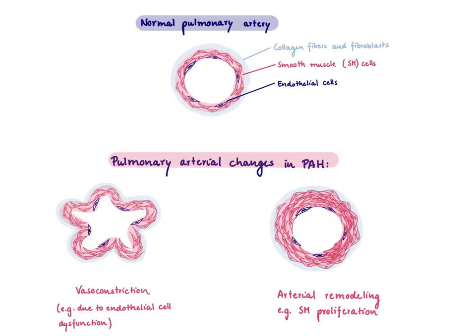So why could you have a problem within the pulmonary arteries? Here I have drawn a nice wide open pulmonary artery. You can see the smooth muscle layer, the collagen fibers around it, and the endothelial cells. In a patient with pulmonary arterial hypertension, the pulmonary arteries are narrow. This could be due to vasoconstriction — there might be too many vasoconstrictive mediators around, in contrast to vasodilatory mediators.